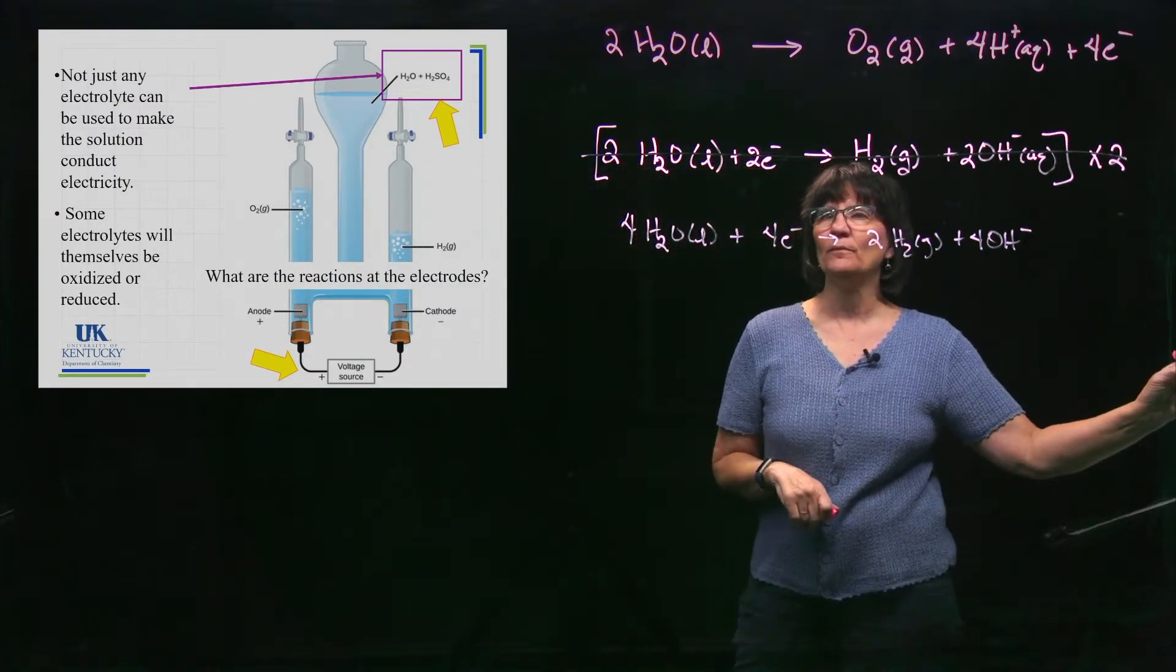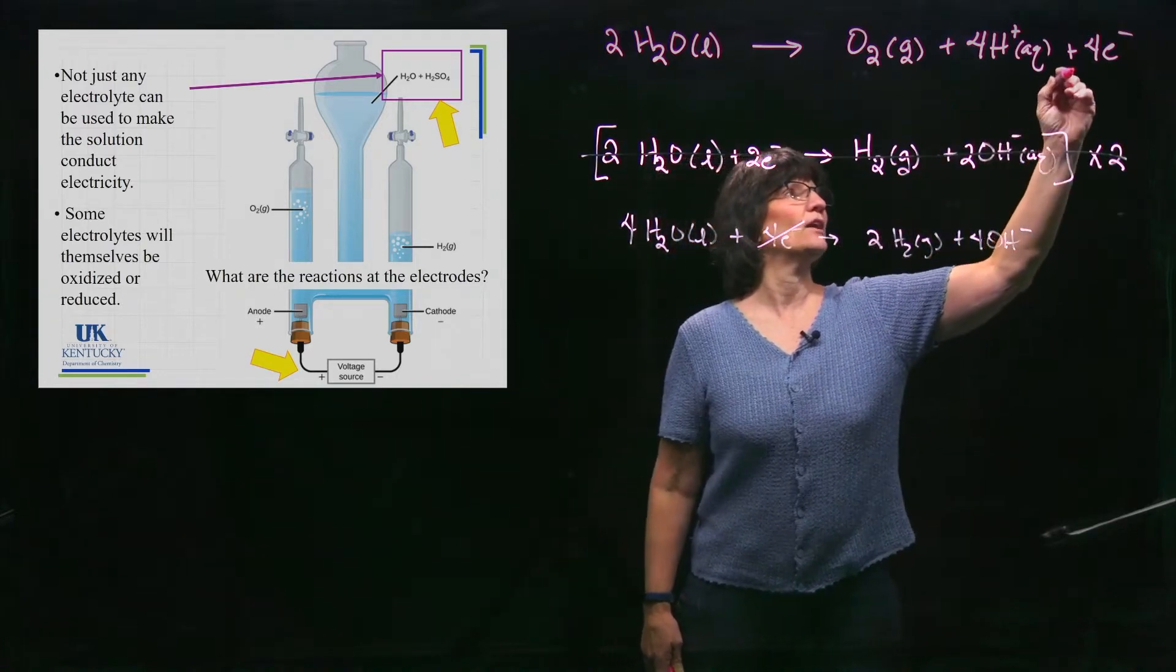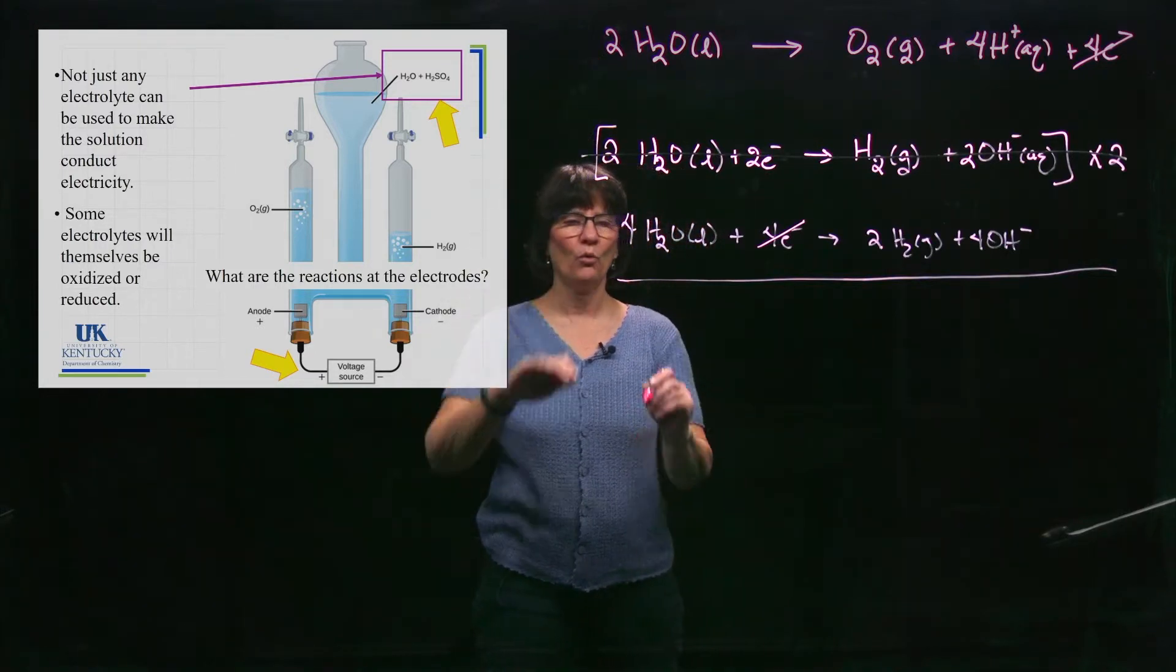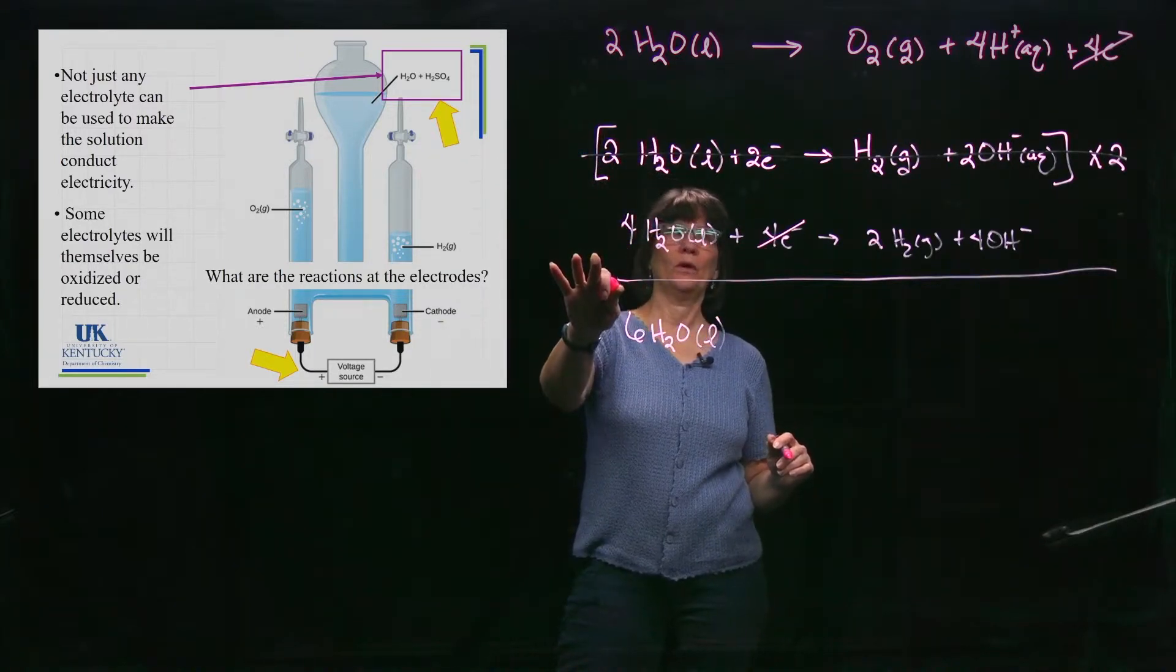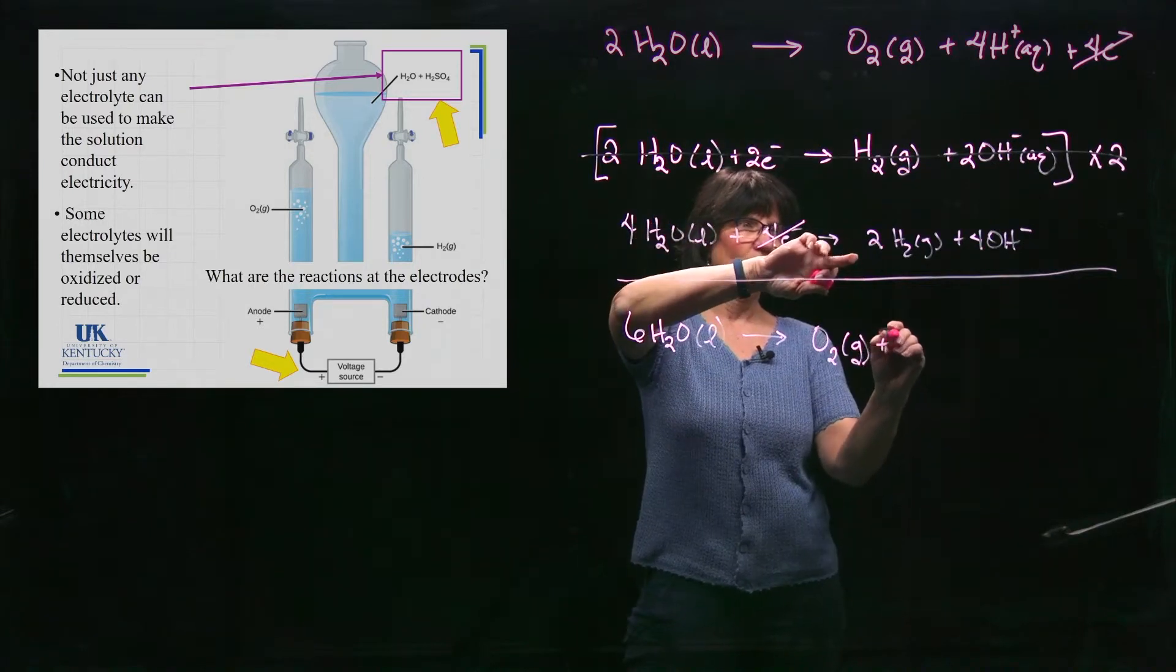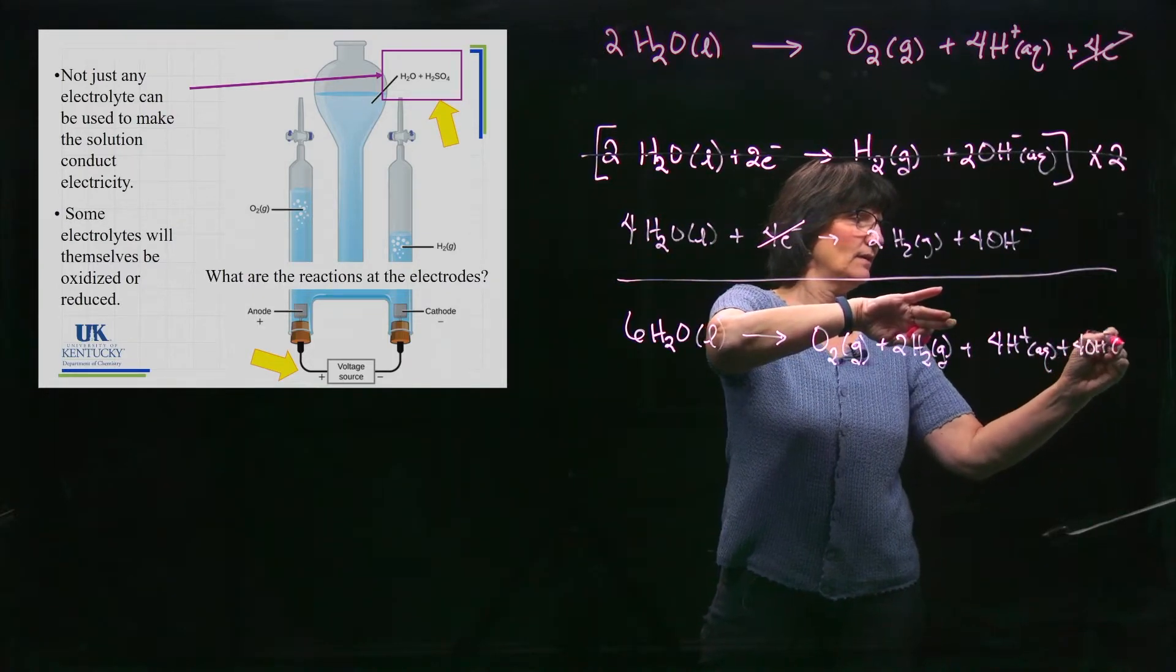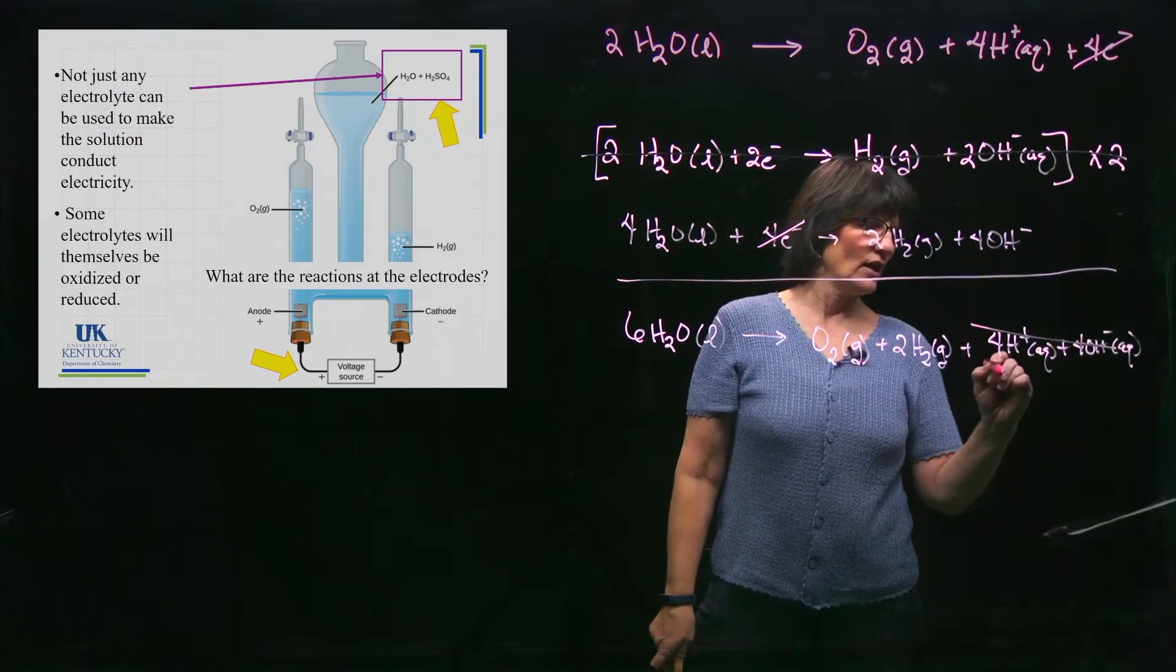When we add these two half reactions together, we can cancel out things that are the same on both sides and bring everything else down. The only thing that's the same is the four electrons. Now let's bring everything down together. I see nothing else that can cancel. Two waters plus four waters is six waters. On the right-hand side, I've got my oxygen and my hydrogen. I've got my four H⁺ and my four OH⁻.